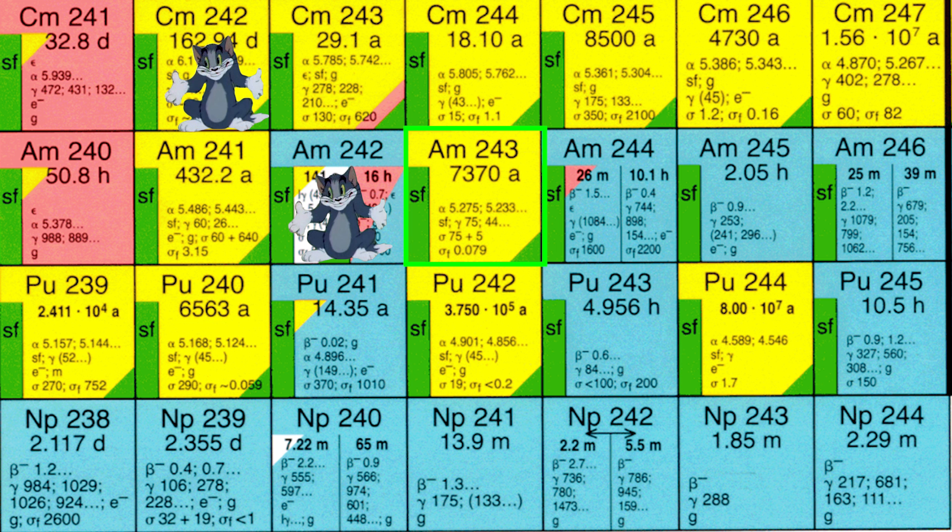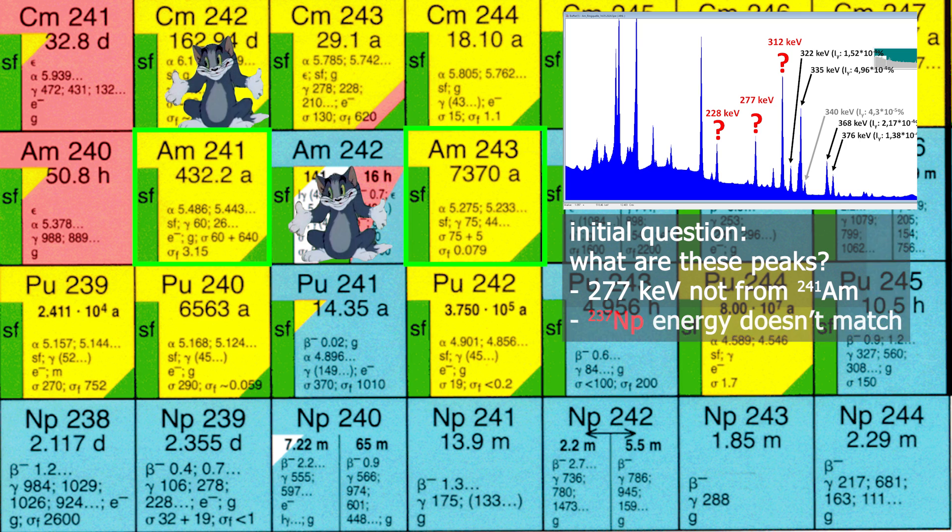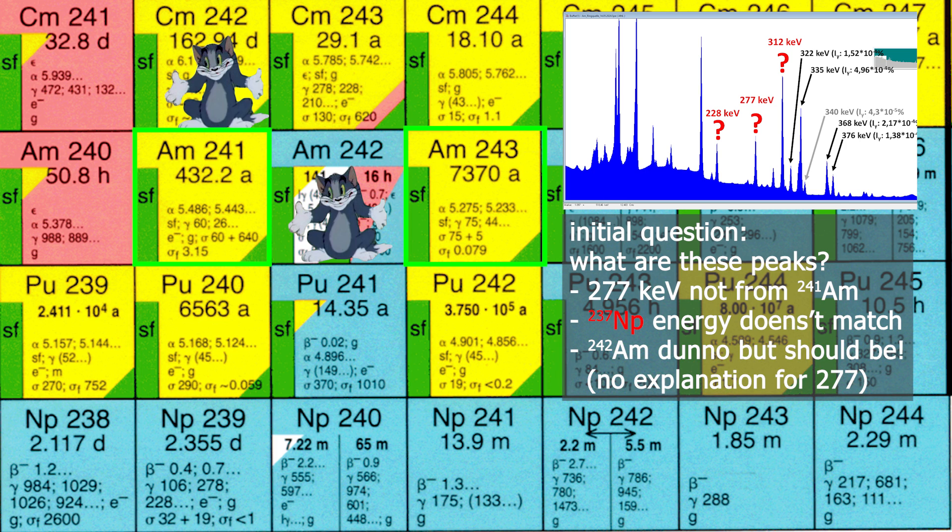Status update. Americium-241, everything up to 10 to the power of minus 5% is easily visible, but the 277 line doesn't come from americium-241, as it doesn't emit such a line. We've looked into what it could be. It can't be the daughter nucleus, because neptunium-237 doesn't have this line.